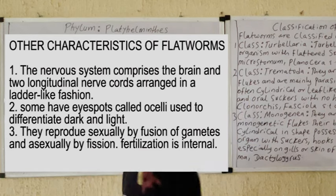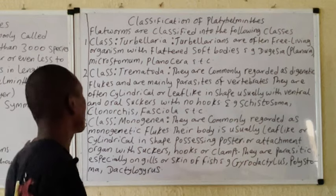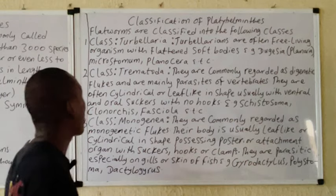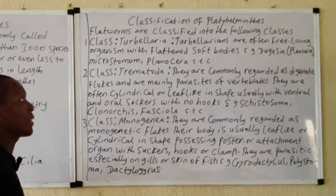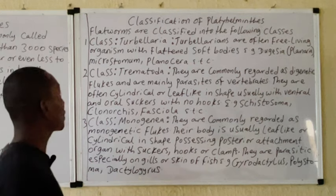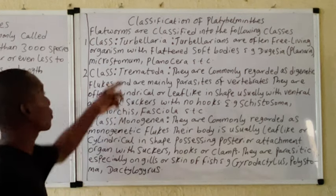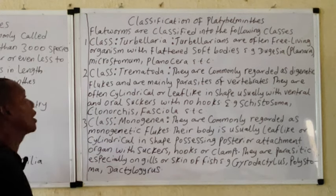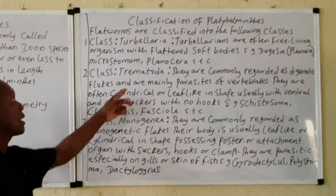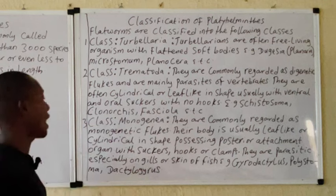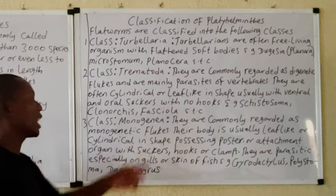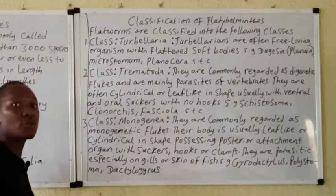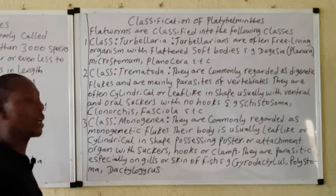Classification of Platyhelminthes: the Platyhelminthes are classified into the following classes — we have the class Turbellaria, we have the class Trematoda, we have the class Monogenea, and the last class, which is Cestoda.